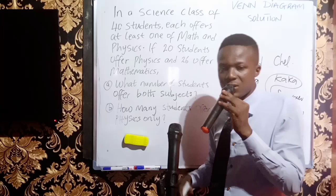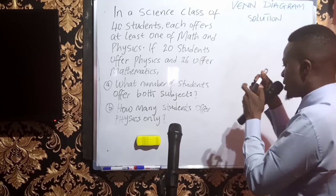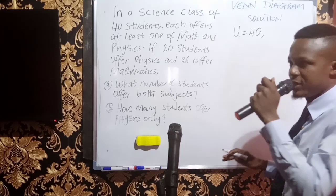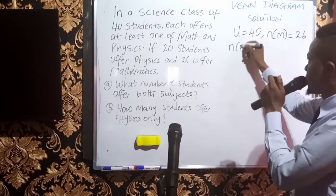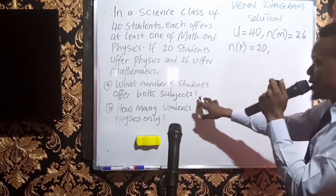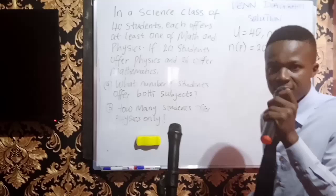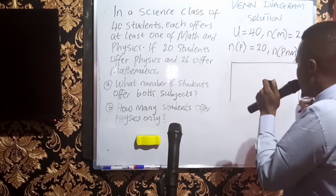Now let us solve this question. The universal set U is 40 students. Let M represent mathematics and P represent physics. The cardinality of M is 26, the cardinality of P is 20. We don't know the number of students for both subjects, so we use X to represent students who offer both physics and mathematics. We represent this information in a Venn diagram.